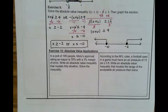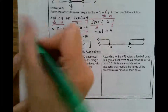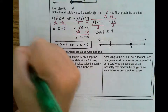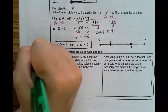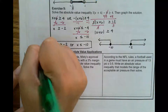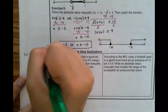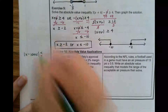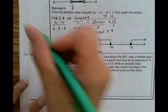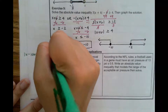Hi guys, so today we're going to be talking about absolute value applications and where we see them. Oftentimes it has to deal with something's distance away from what we want. So the equation is the absolute value of x minus what we ideally want — what we hope it will be, what our goal is — and then depending on the question, it will either be less than or greater than how far off we can be, which we call the margin of error.